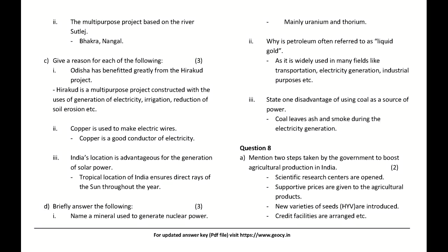India's location is advantageous for the generation of solar power because the tropical location of India ensures direct rays of the sun throughout the year. Name a mineral used to generate nuclear power. Answer: Mainly uranium and thorium.